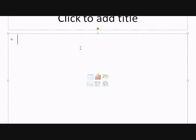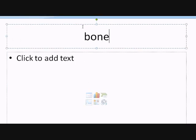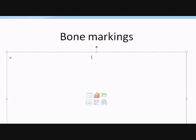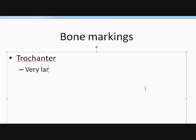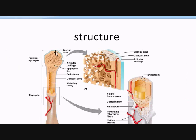Bone markings can be one of the hardest sections for a lot of students to pick up. So for the bone markings, let's talk about a few of the projections. We have the trochanter — a trochanter is a very large, irregularly shaped process. Remember, a process is essentially a protrusion of some sort. So when you talk about a trochanter, you're talking about a large irregular shaped process, something you find on the femur.